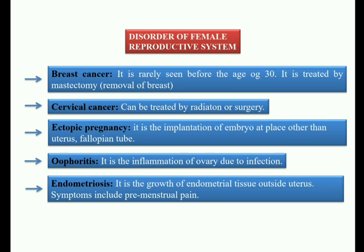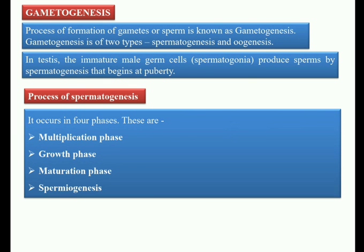Now we move to the next topic: gametogenesis. Gametogenesis is the process of formation of gametes — sperm or egg. There are two types of gametogenesis: spermatogenesis, which is the formation of sperm, and oogenesis, which is the formation of eggs. We will begin with spermatogenesis.